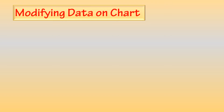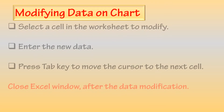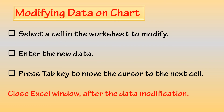Modifying data on a chart: First, select a cell in the worksheet to modify. Enter the new data. Press the Tab key to move the cursor to the next cell. Then close the Excel window after the data modification.